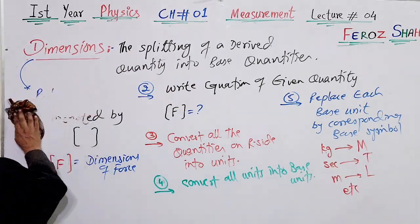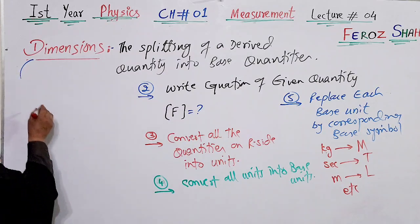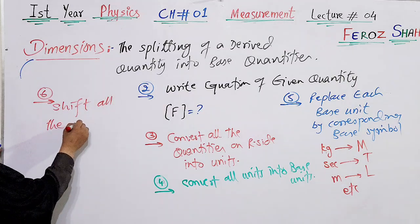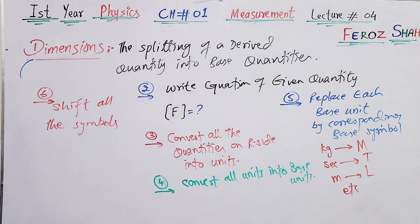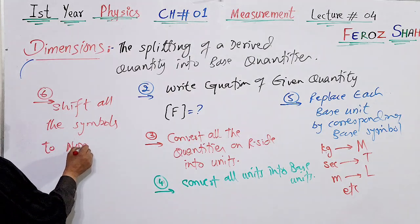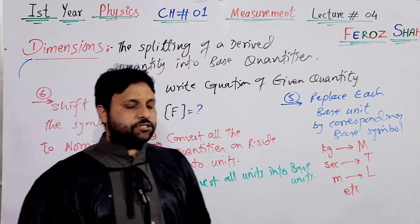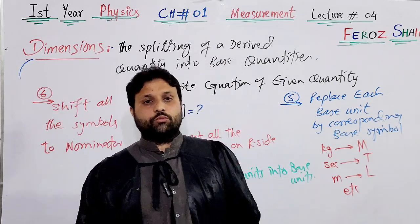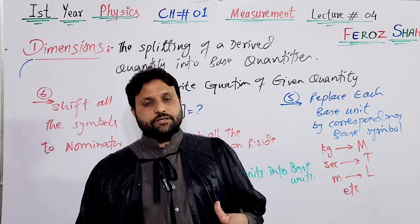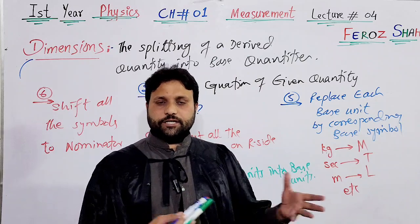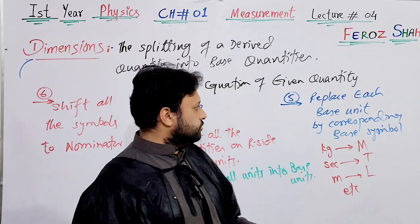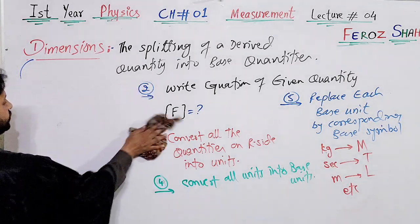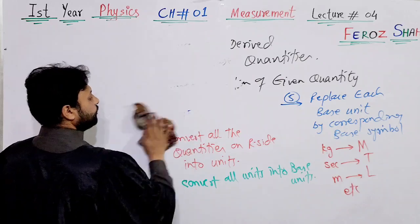The last rule, rule six, is: shift all the symbols to the denominator. These are the six rules of dimensions. To summarize: dimension is the splitting of a derived quantity into base quantities, and there are six rules to follow to get the dimension of a physical quantity. Now let me share some examples and after that some important points.